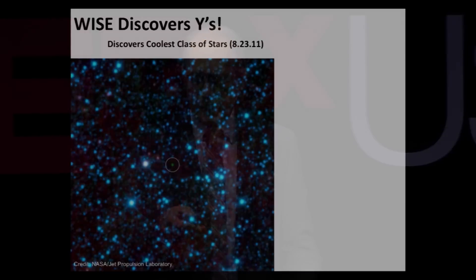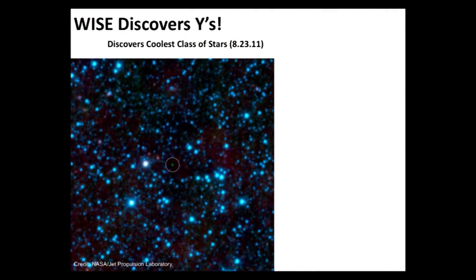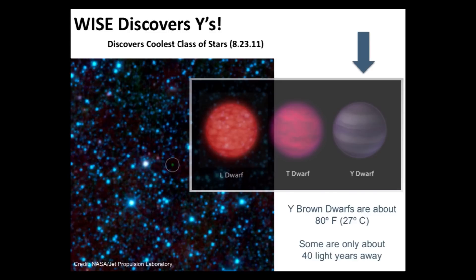WISE discovered some very cool objects — what we call Y-class brown dwarfs. There are different kinds of dwarf stars. These are basically failed stars — they collapse under their own gravitational energy and never reach the temperatures in the center necessary for thermonuclear fusion to create a bright star like our sun. And WISE found this very cool star — in the sense that its surface temperature is only about 80 degrees Fahrenheit, just a day on the beach.